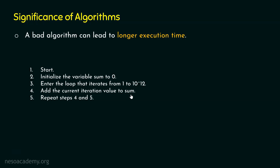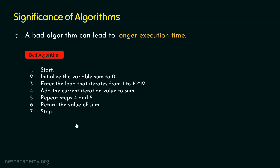In this way, we get the sum of first 10 to the power of 12 natural numbers using the loop. Finally, we return the value of sum and stop the algorithm. This is a bad algorithm. If we convert this algorithm to its equivalent program, that specific program will take a lot of time to execute.